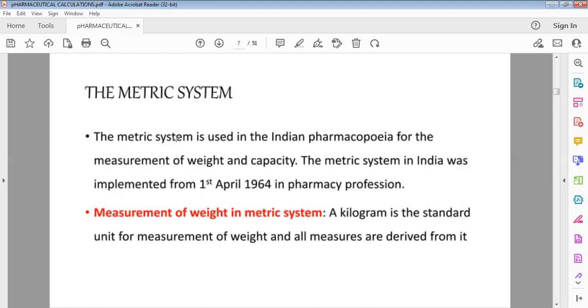The metric system: In Indian pharmacopoeia we use the metric system for measuring weight and capacity. Metric system in India was implemented 1st April 1964 in pharmacy profession. Measurements of weight in metric system use grams, kilograms, milligrams. A kilogram is the standard unit for measurement of weight and all measures are derived from it.